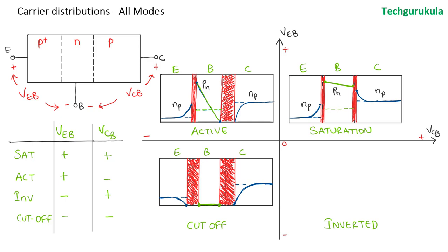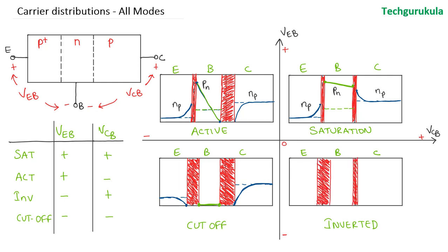Now coming to the inverted region of operation, where the emitter junction is reverse biased and the collector junction is forward biased. Hence the depletion region at the emitter junction would be larger and the depletion region at the collector junction would be smaller. As the collector junction is forward biased, there would be electrons injected from base to collector. Hence there would be some concentration here, and as the electrons go deeper into the collector, they get recombined and the carrier concentration would look like this — this is electron concentration in the p-type material, that is, in the collector.